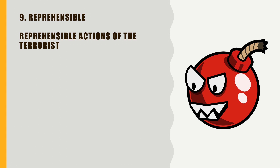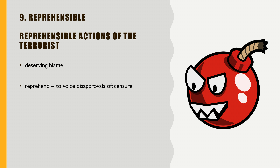Reprehensible — the reprehensible actions of the terrorist. Terrorists do terrible things, and reprehensible actions are deserving of blame — it's bad, something we should criticize. The verb 'reprehend,' which forms the basis of this word, means to voice disapproval of, to censure — which is to publicly criticize someone. You might say their actions are reprehensible.